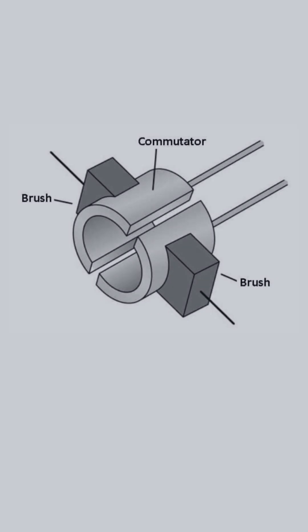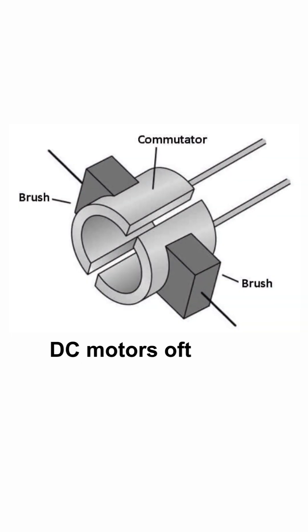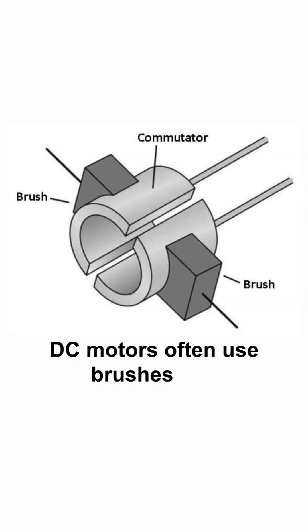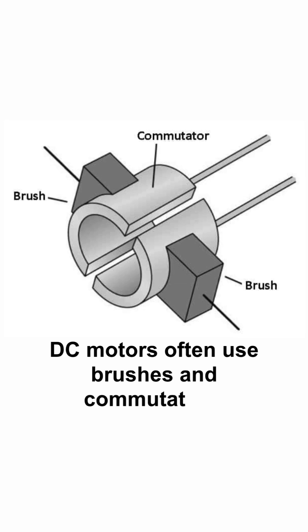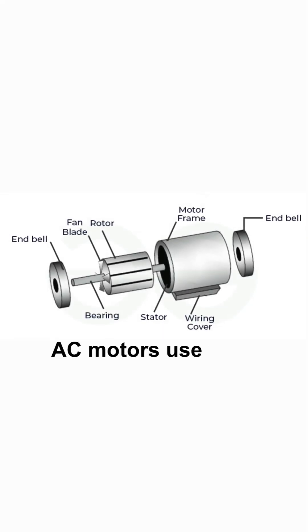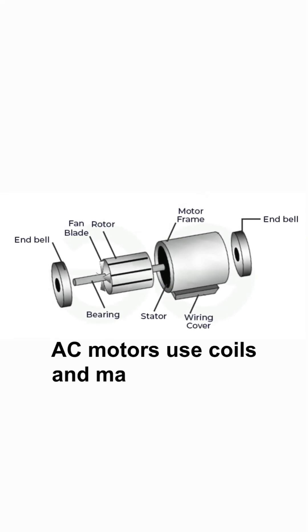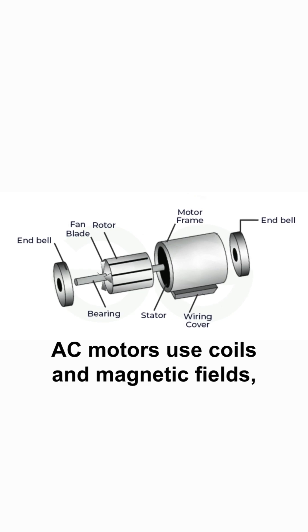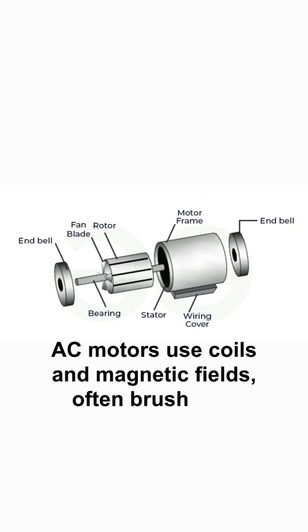Construction. DC motors often use brushes and commutators. AC motors use coils and magnetic fields, often brushless.